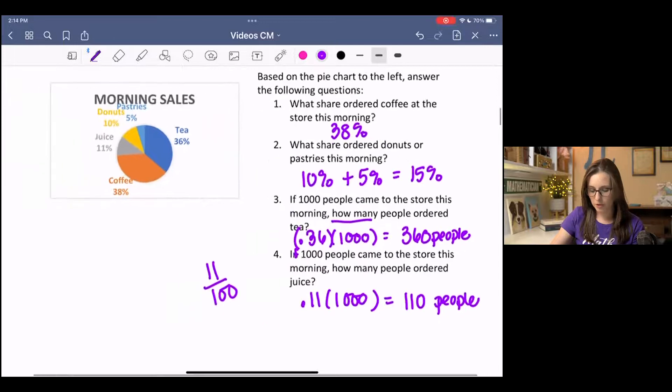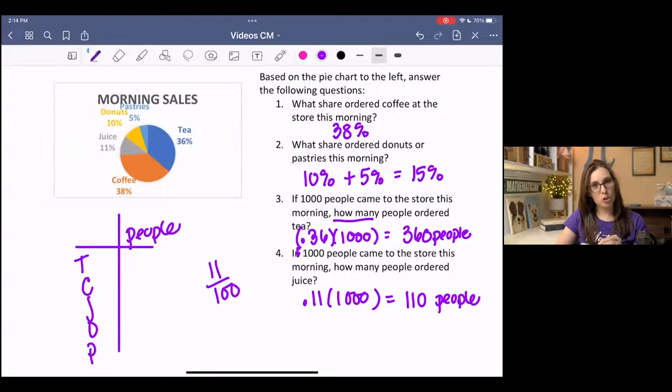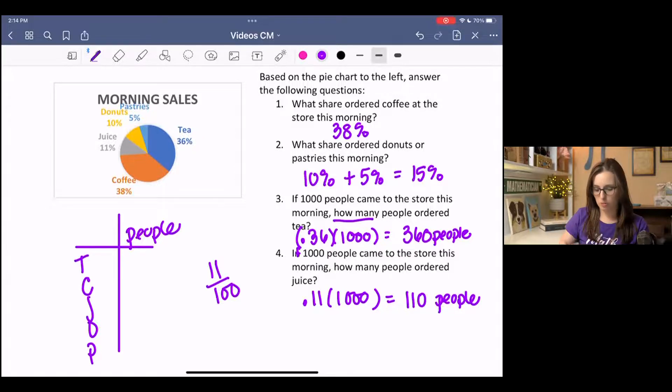So if we made a little table here, I'm not going to do the whole thing, but you could. Of all the categories, we could list out the number of people who ordered those things, and all of those numbers should add up to 1,000 people. But if we list out the percentages, then those percentages should add up to 100%. So just watch out for that.